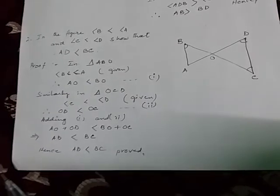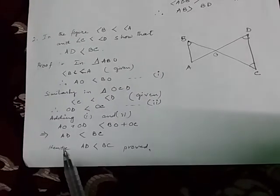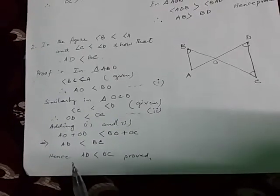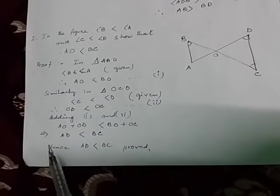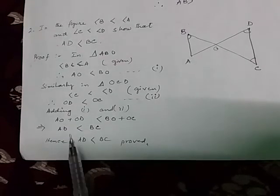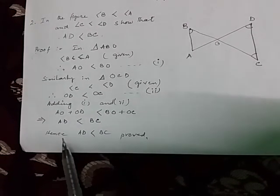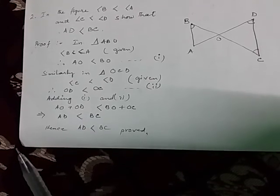Now adding equation 1 and 2, AO plus OD is less than BO plus OC. So AO plus OD is giving us AD which is less than BO plus OC is BC. Hence, AD is less than BC proved.